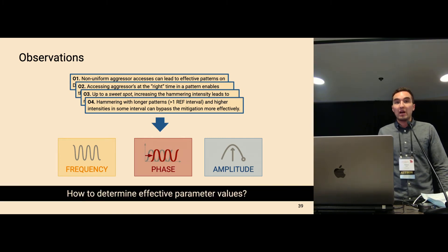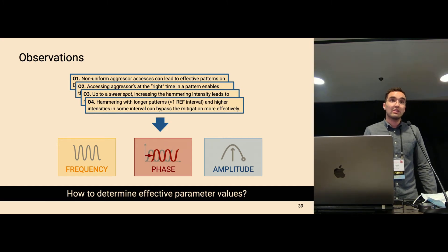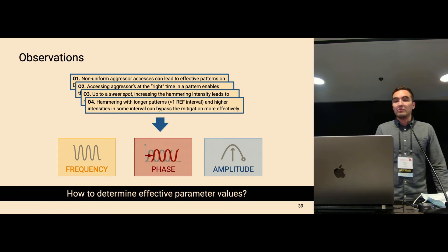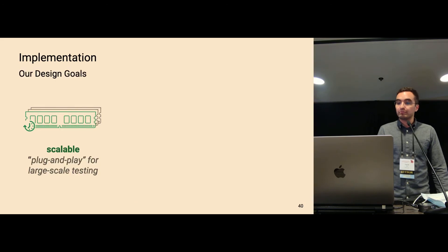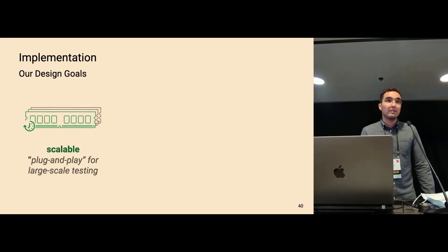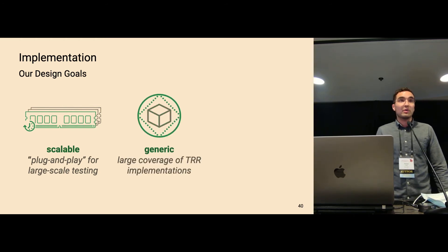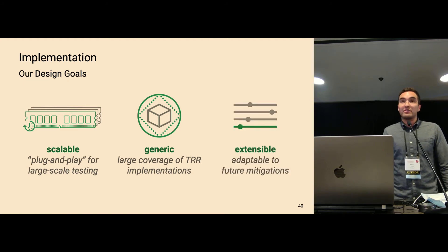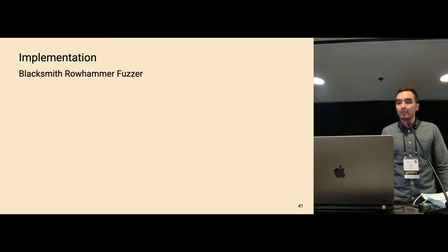But now the question is, how to determine effective parameter values? Because the parameters depend on the mitigation that is deployed on the device. And these mitigations are different across vendors and also on different devices from the same vendor. And we wanted to have a solution that is scalable that allows us to test a large number of different devices, a generic solution. This is why we generalize our observations to the three properties and an extensible solution. So if vendors make any change, we can refine our model. And for this, we build the Blacksmith row hammer fuzzer.